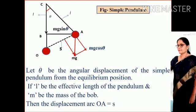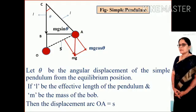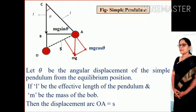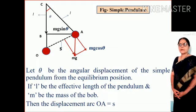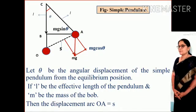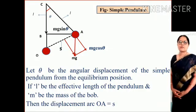Let theta be the angular displacement of the simple pendulum from the equilibrium position. L is the effective length of the pendulum and m is the mass of the bob. The displacement arc OA is equal to s, that is shown in the figure.